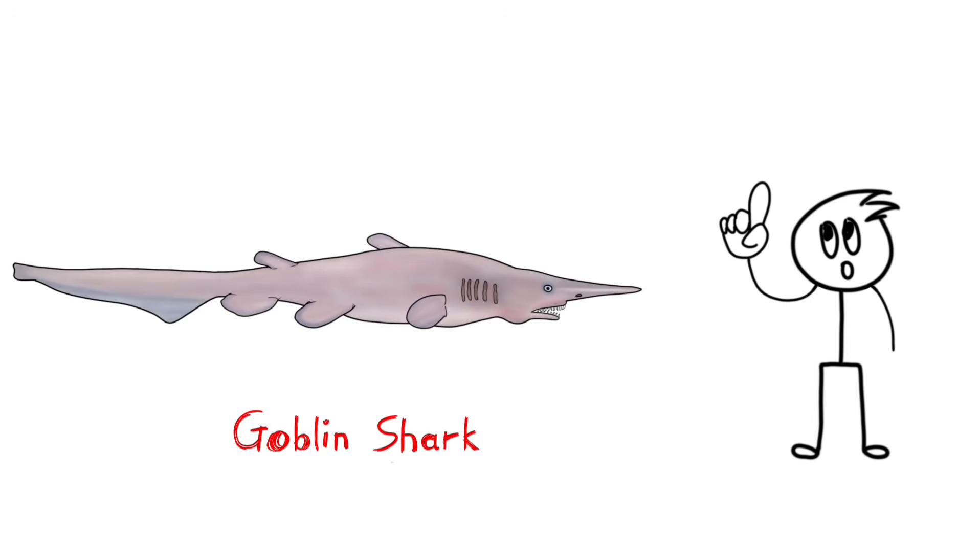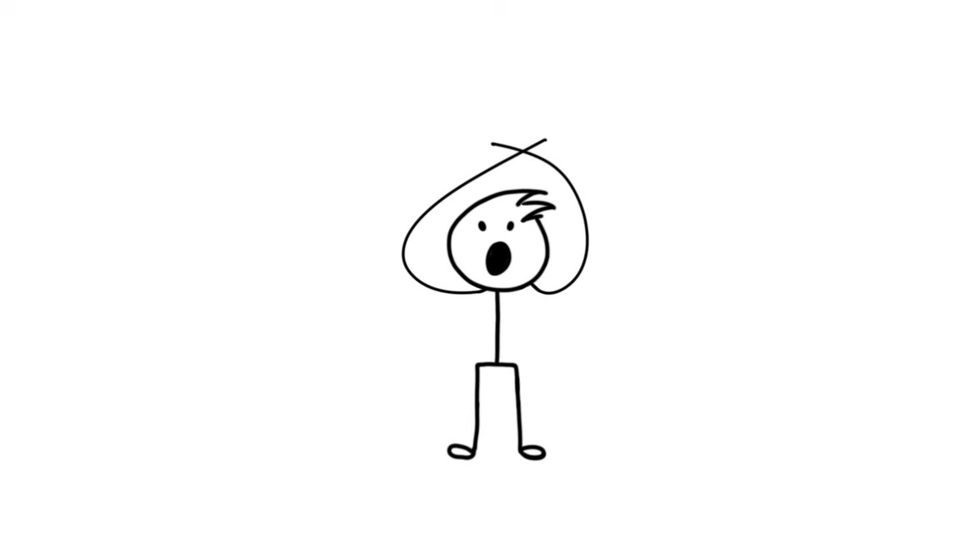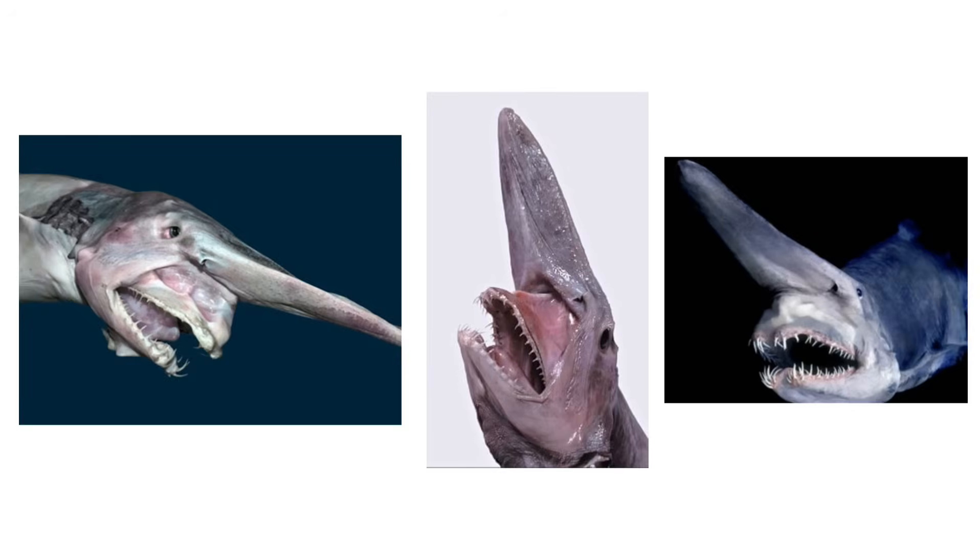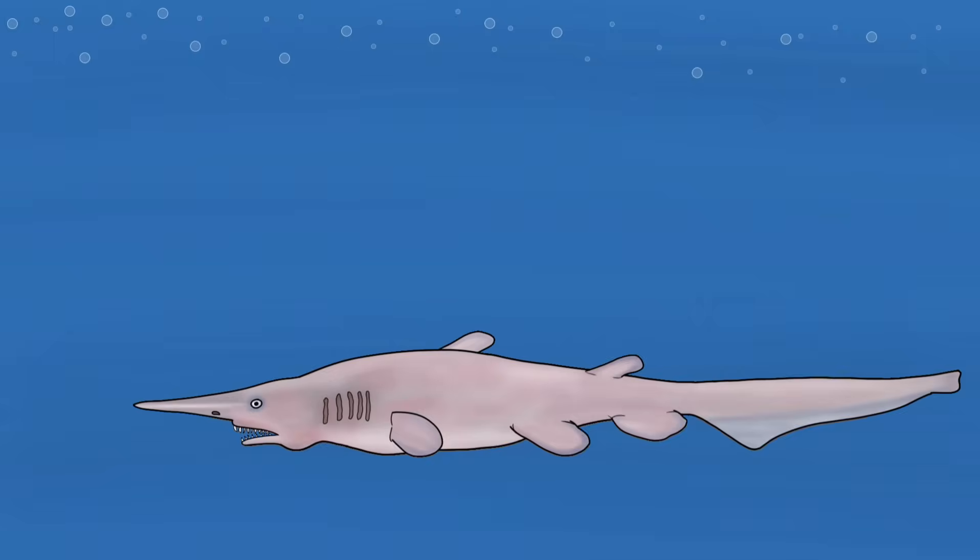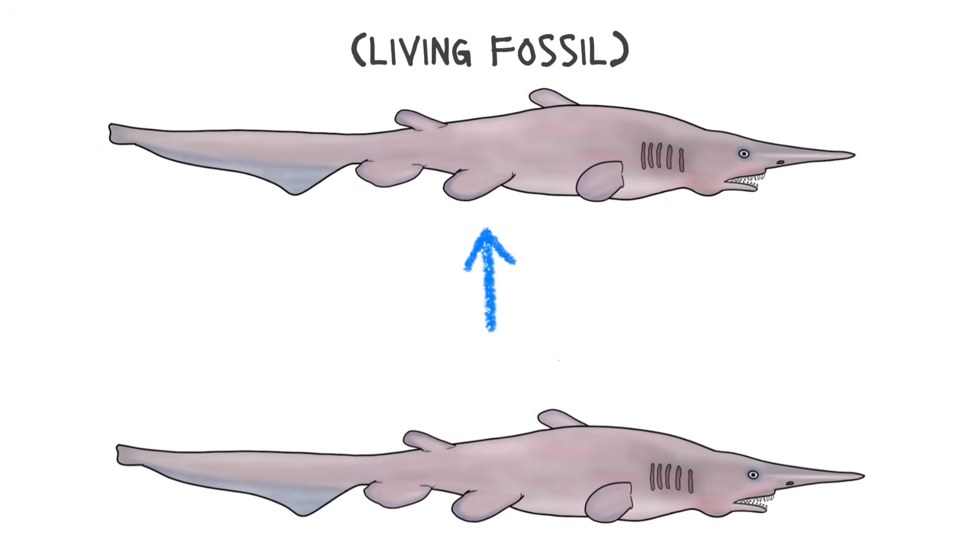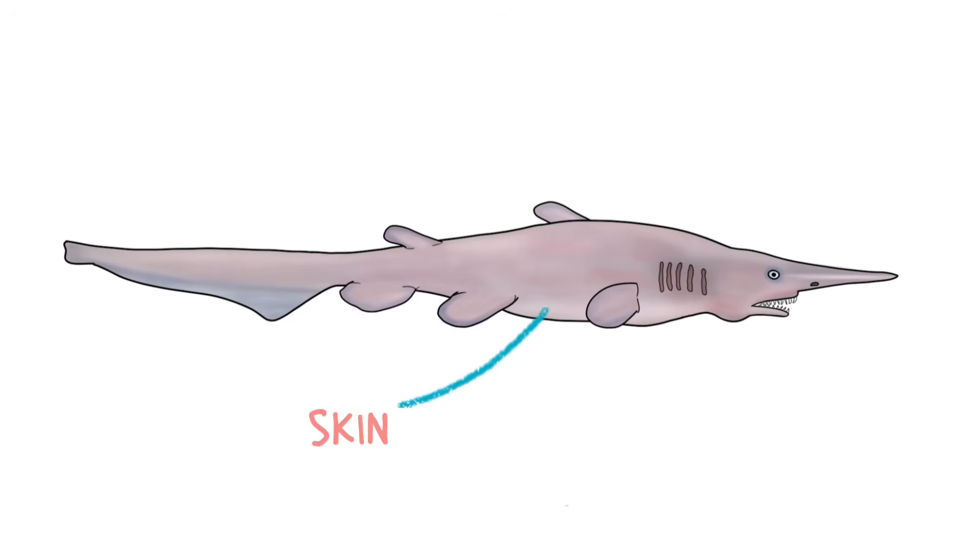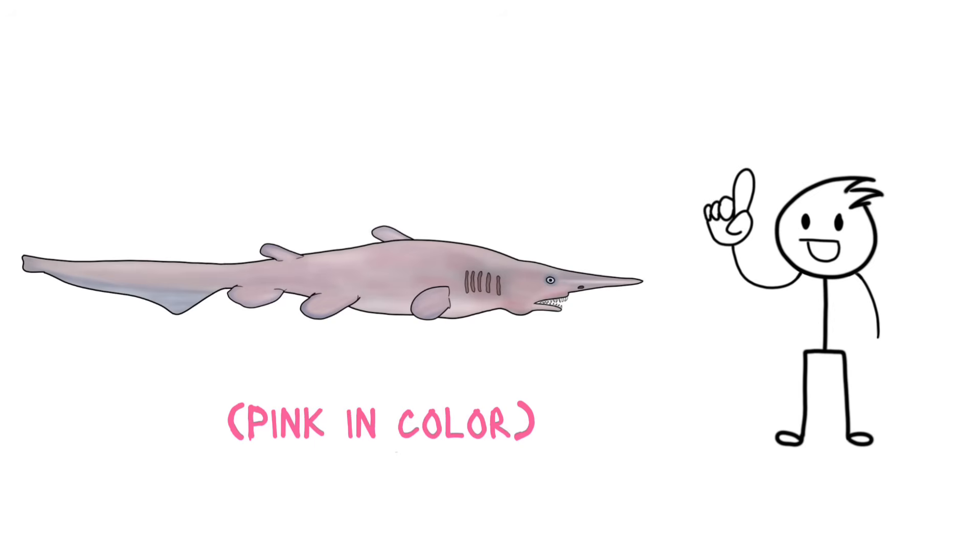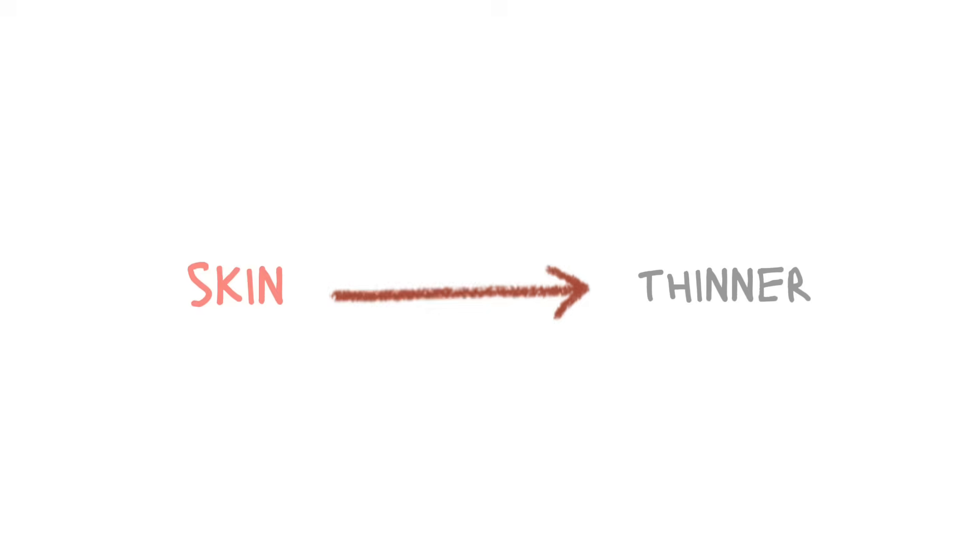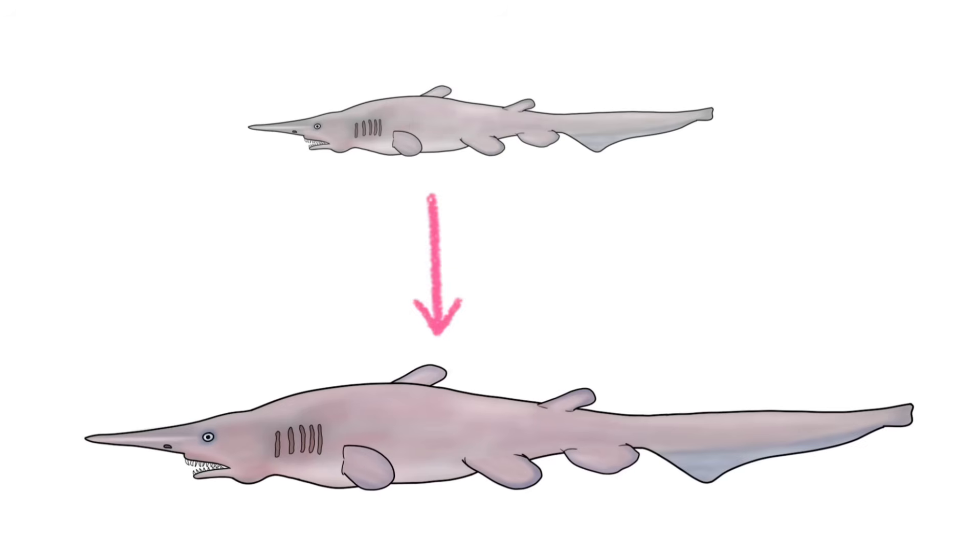This guy is a goblin shark, and if you think nightmares aren't real, well, just look at this guy. Even their babies look scary. Found in the deep oceans around the world, these living fossils haven't changed much in over a hundred million years. The skin of goblin sharks is translucent, and the blood is visible from outside. So, these sharks are pink in color. The skin becomes thinner with age, and they become pinker as they grow.